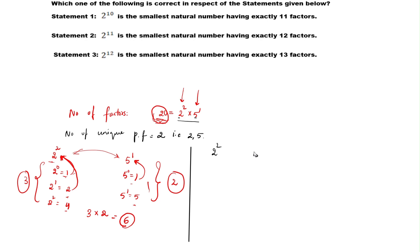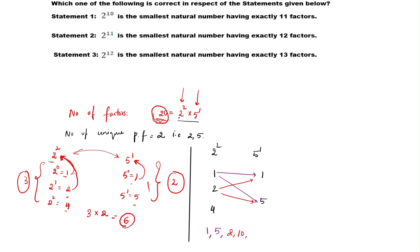Let me show you what the combinations are. Individual factors of 2 squared are 1, 2, and 4; individual factors of 5 to the power 1 are 1 and 5. Combinations: 1×1=1, 1×5=5, 2×1=2, 2×5=10, 4×1=4, 4×5=20. So we get 1, 2, 4, 5, 10, 20 — that is 6 factors, which is the same answer we got.